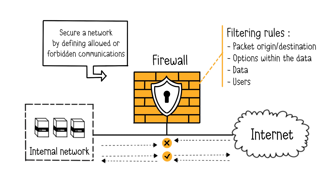Access control and communication are also managed between various internal network zones, and not only with the internet. The most common access filtering rules include packet origin and/or destination using IP addresses, TCP/UDP ports, etc., options contained within the data like fragmentation or validity, the data itself, and even users for more recent firewalls by deeply analyzing the application data.